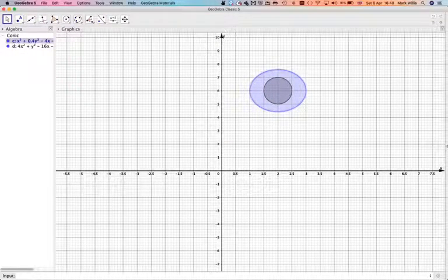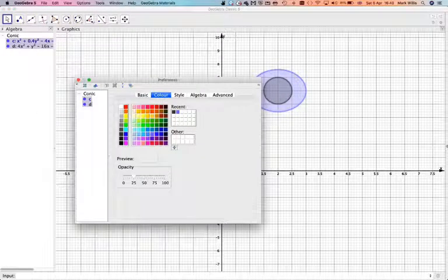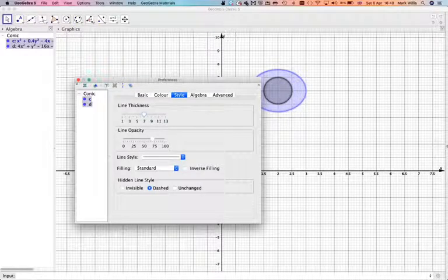Okay, well, I might make, maybe make the lines a bit thicker. So I'll make the lines a bit. So I'll select both, right click, go to properties, and then go to style. And I probably should make the lines about 7 so they stand out.